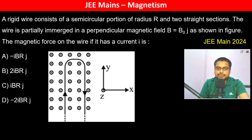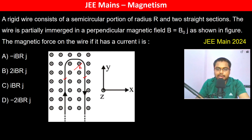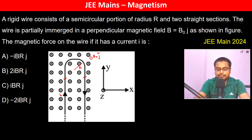A rigid wire consists of a semicircular portion of radius R and two straight sections. The wire is partially immersed in a perpendicular magnetic field of B₀ĵ, which is pointing outwards as shown in the figure. The magnetic force on the wire, if it carries current I, is to be determined.